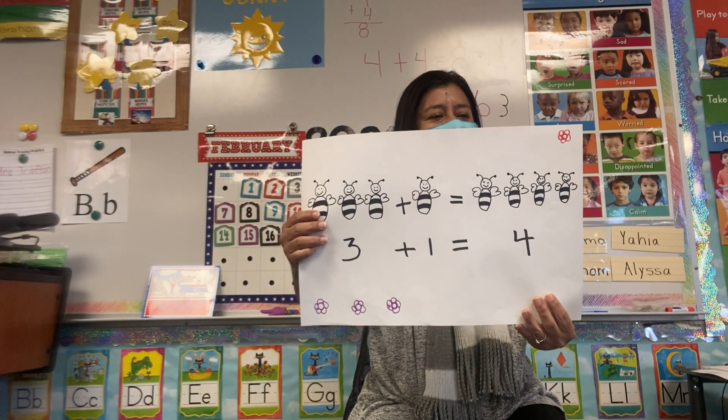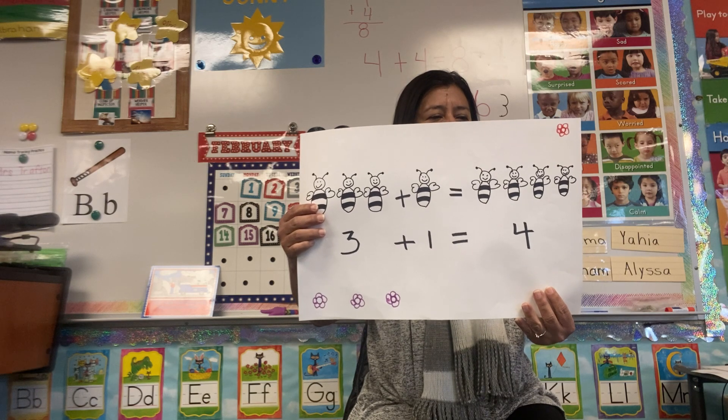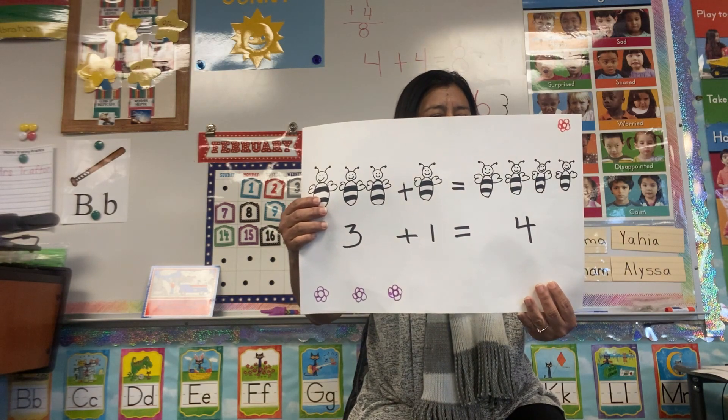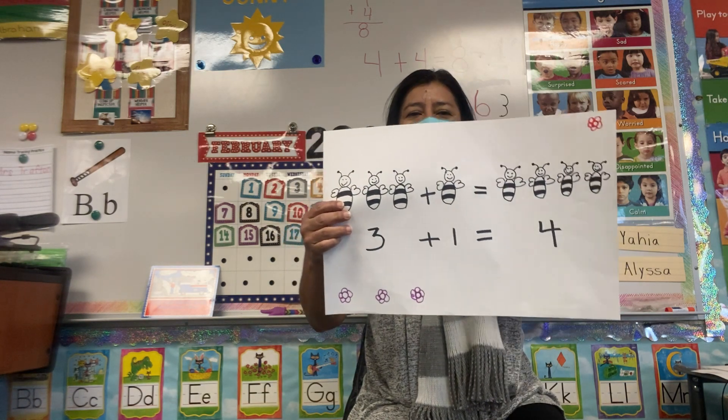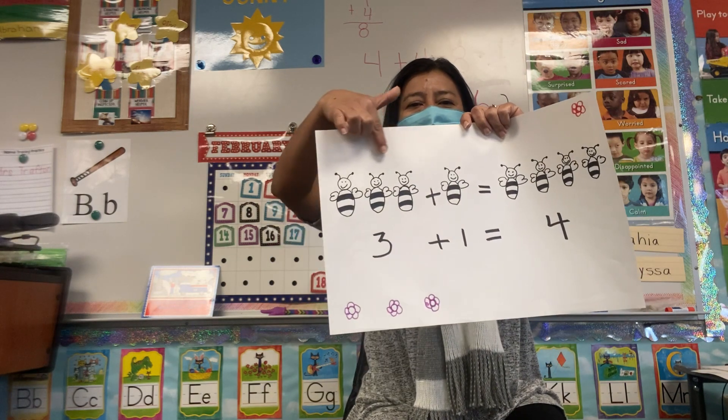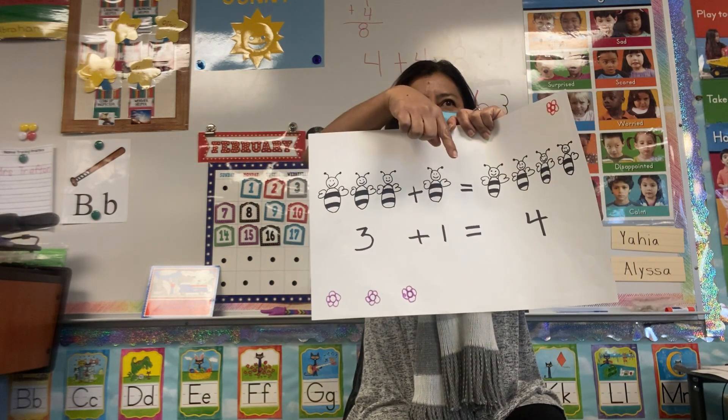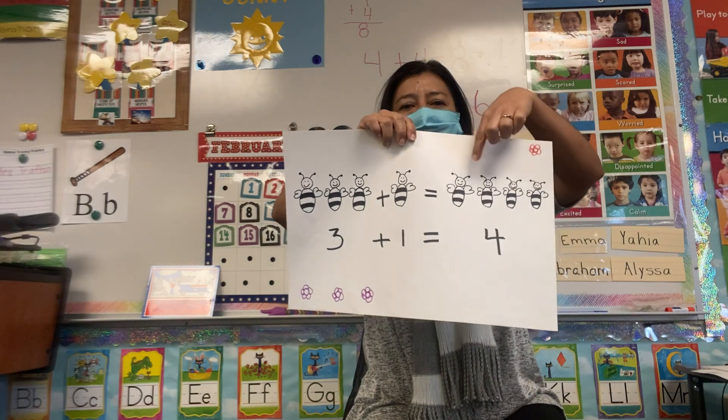Okay, three little bees wanted one more, found one soon, and that made four. Three bees plus one more equals four.